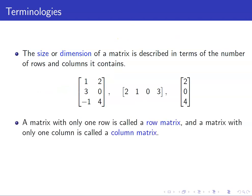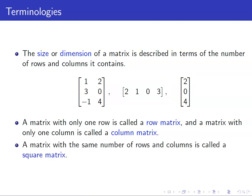A matrix with only one row is called a row matrix. Like in this case, we have here a row matrix. And a matrix with only one column is called a column matrix — this matrix over here is a column matrix. A matrix with the same number of rows and columns is called a square matrix.